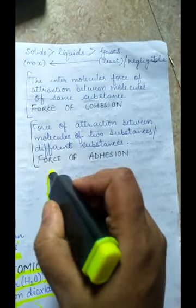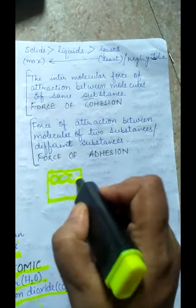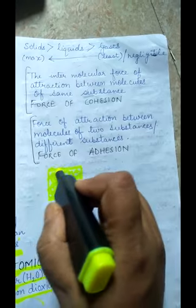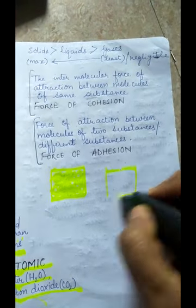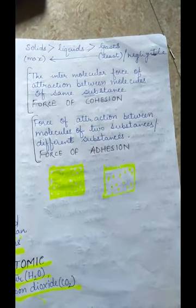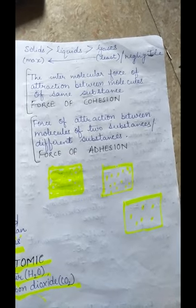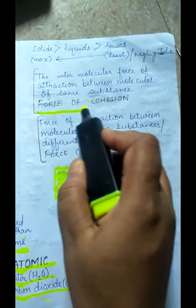In solids, the molecules are tightly packed with no space between them, so they have maximum force of attraction between the molecules. In liquids, they are loosely packed, so they have a force of attraction somewhere between solid and gas. In gases, the molecules are very loosely packed, so they have the least or negligible force of attraction between them. The intermolecular force of attraction between molecules of the same substance is known as force of cohesion.